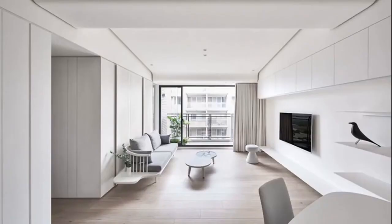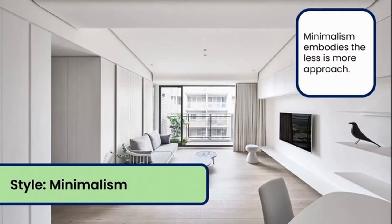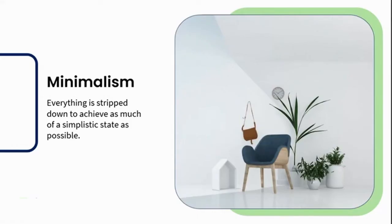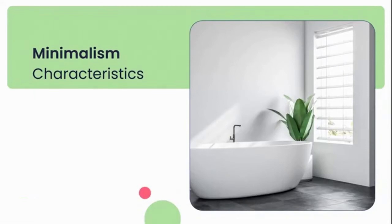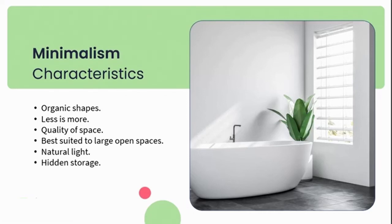Are you thinking about Sophia's apartment? Do any of the styles so far hit any of her brief points? We have now covered mid-century modern, modernism, and our next style is minimalist. Modern and contemporary are the stepping stones to minimalism. Minimalism embodies the less-is-more approach — almost like a zen feel. When it comes to minimalism, everything is stripped down to achieve as simplistic a state as possible. Characteristics include a drive towards the use of organic shapes, a less-is-more approach with less use of ornaments and fussy pieces, focus on the essential quality of the space rather than the objects that fill it, and minimalism is ideally suited to large open spaces. Natural light is also cherished within minimalism.